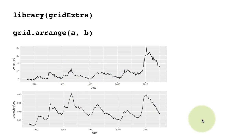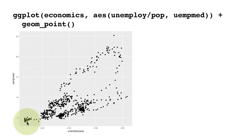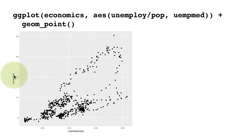Here we do a scatter plot of unemployment rate vs. median weeks unemployed. We do see a roughly linear relationship — when the unemployment rate goes up, the median level of unemployment also goes up — but it's not a perfect straight line because there are many other factors that affect how long people have to wait to find a job. There is a correlation, as expected.